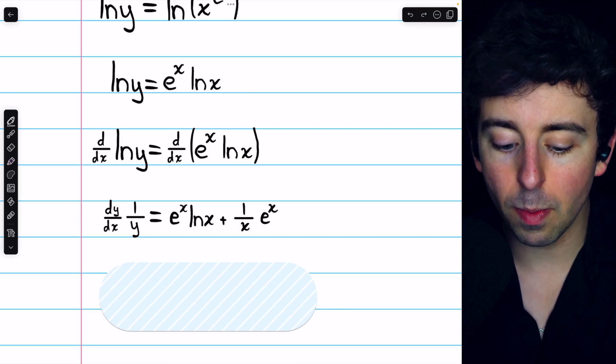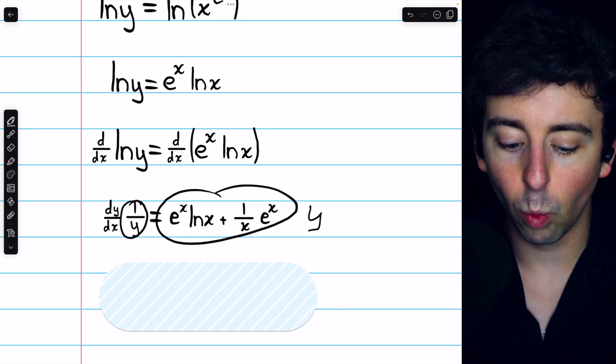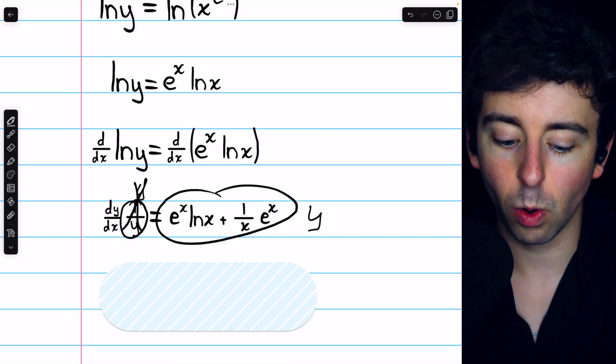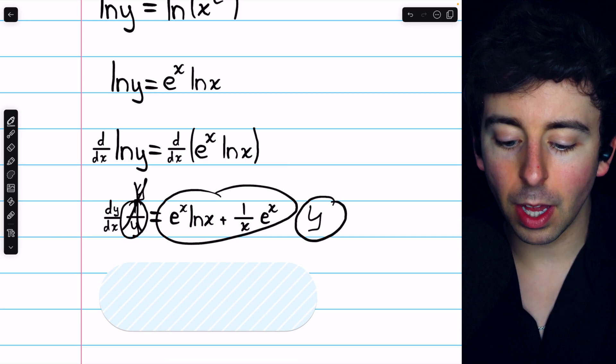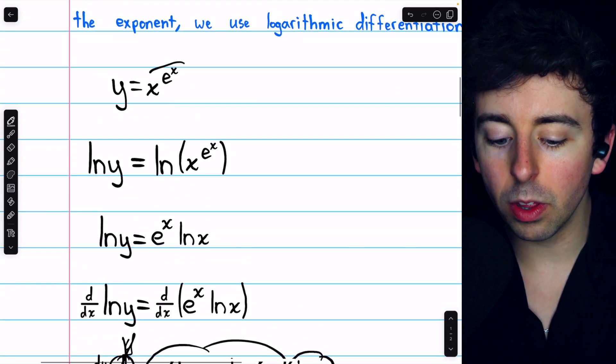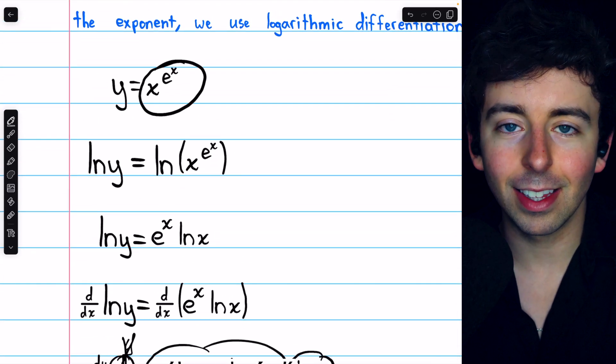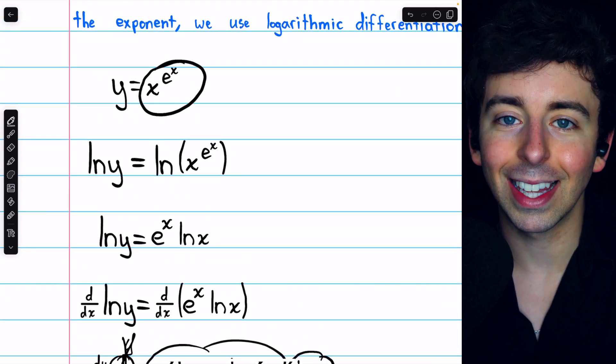To do that, we multiply both sides of this equation by y. That will cancel the 1 over y out on the left. And on the right, we're multiplying by y, but we know that y equals x to the e to the x. So let's write it like that.